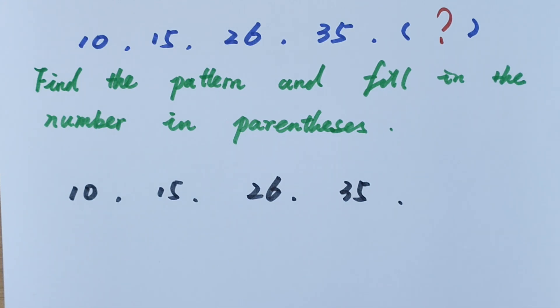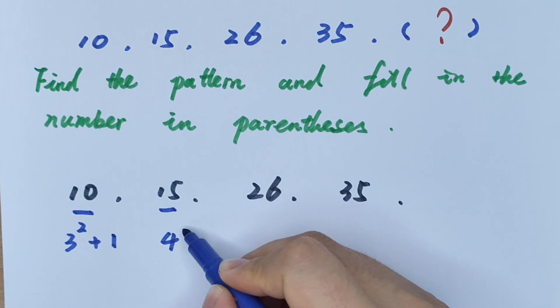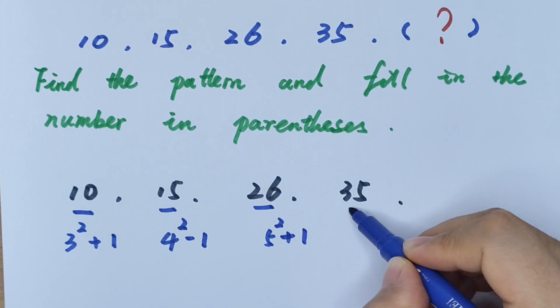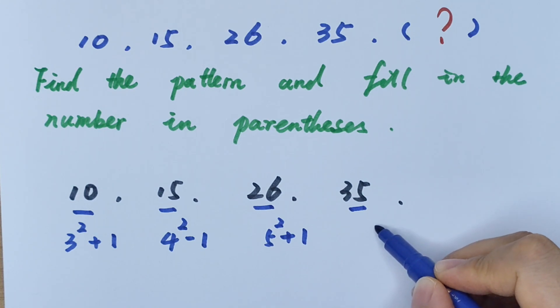We found that these numbers are related to squares. This is 3 squared plus 1, and this is 4 squared minus 1, and this is 5 squared plus 1. This is 6 squared minus 1.